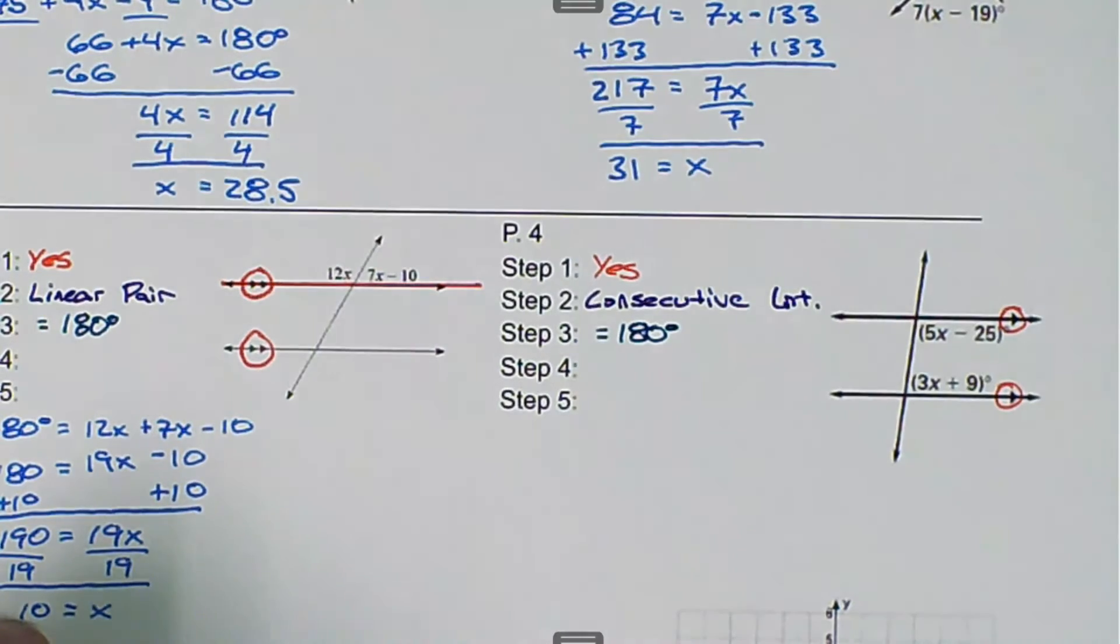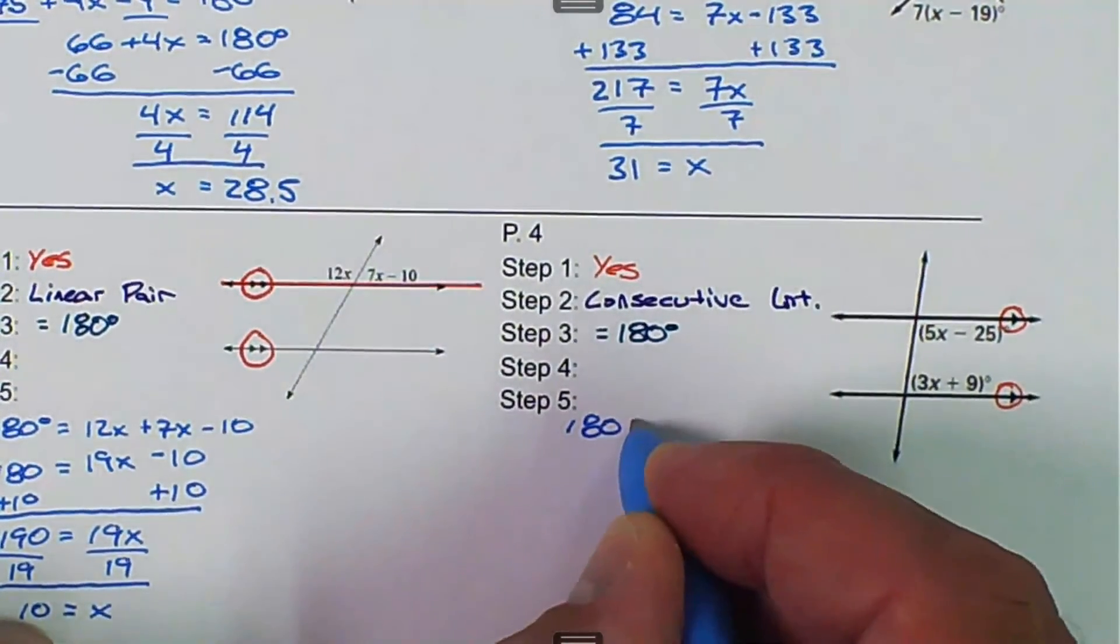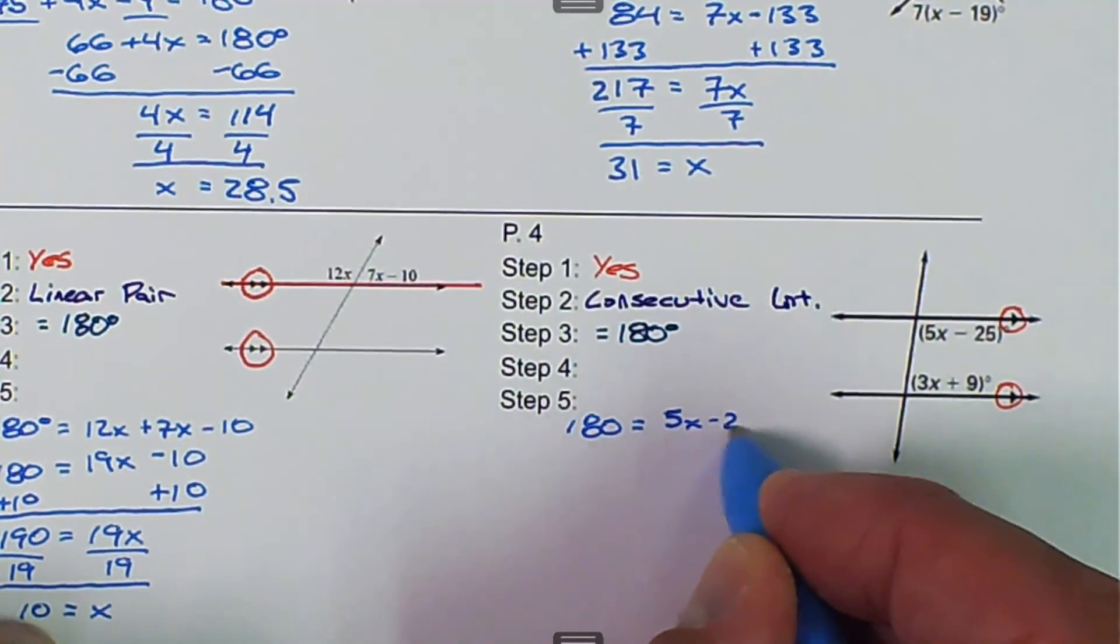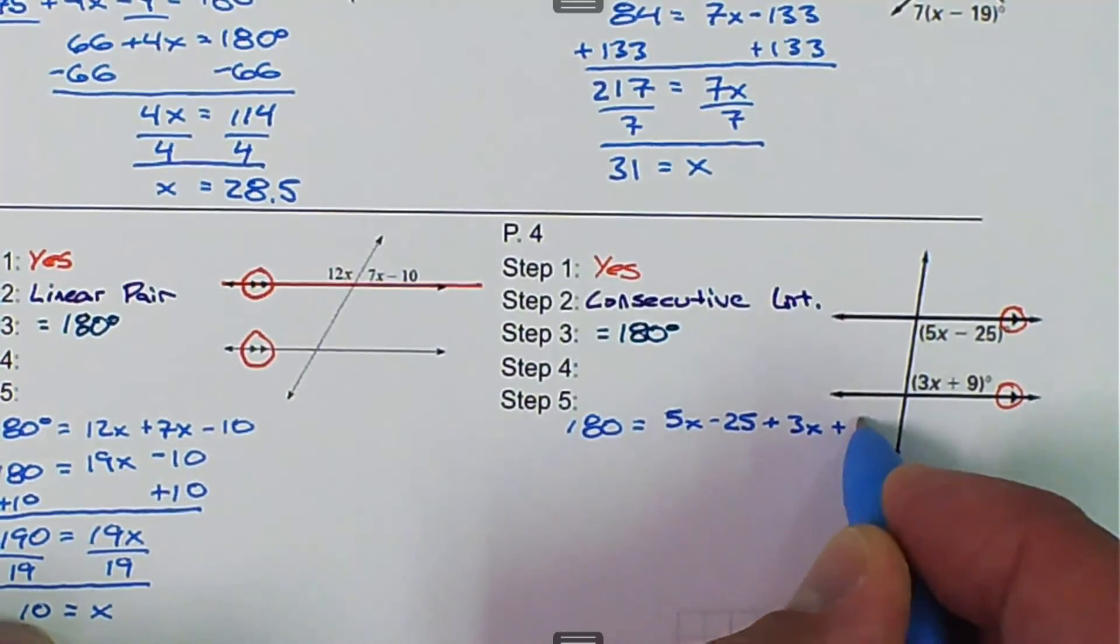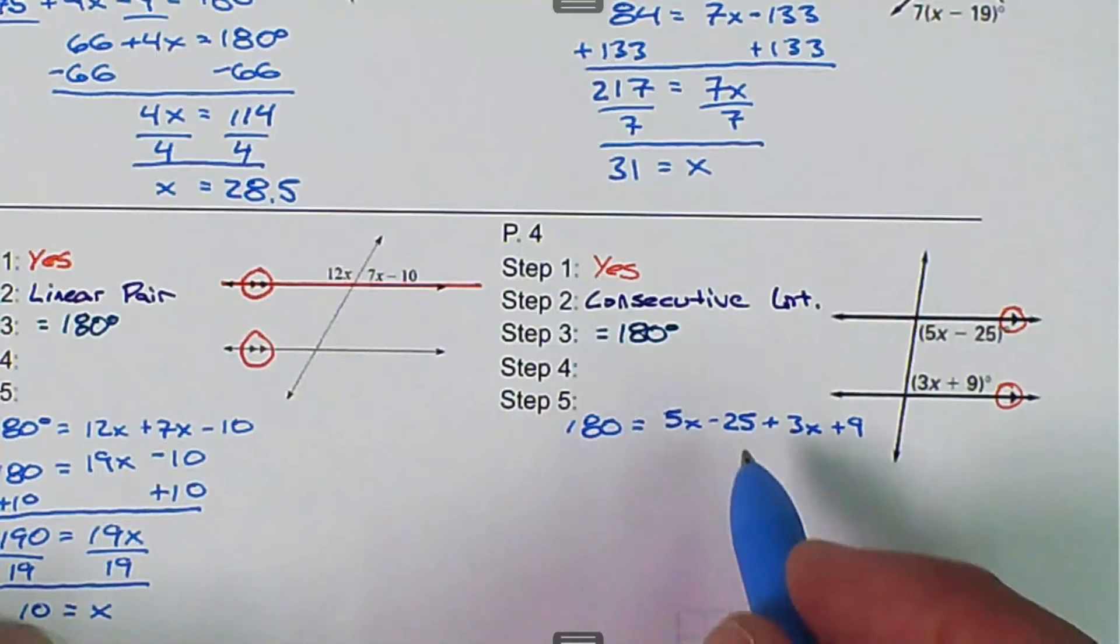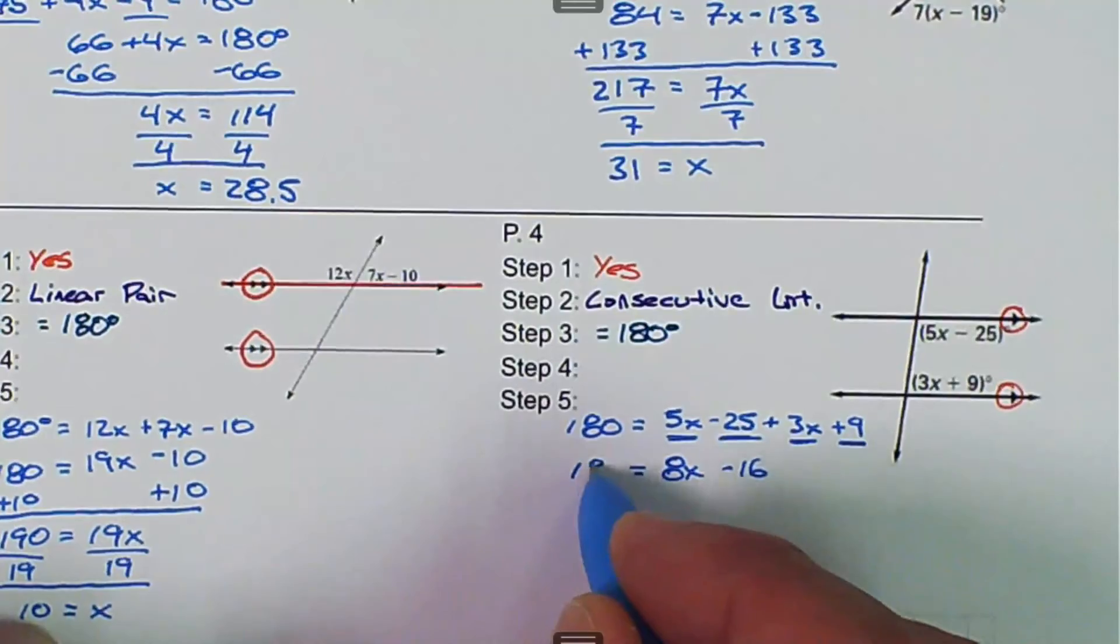So the last thing, we want to set up the equation and then solve it. So 180 is equal to 5x minus 25 plus 3x plus 9. And we're going to do that substitution property of equality. 5x plus 3x is 8x, and negative 25 plus 9 is negative 16. And that's still equal to 180.